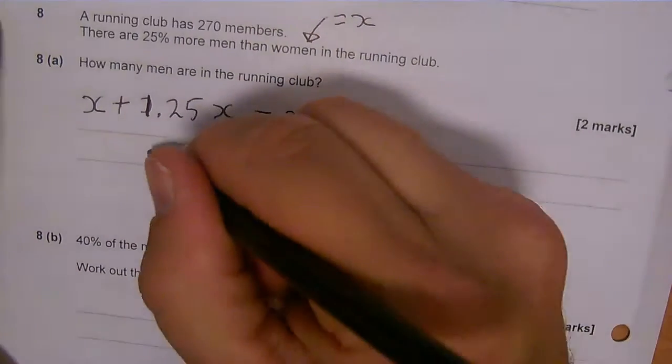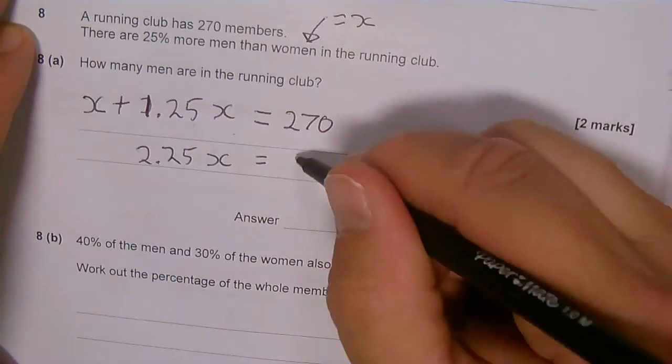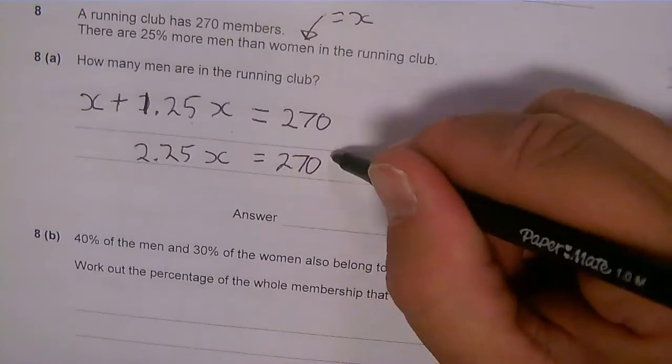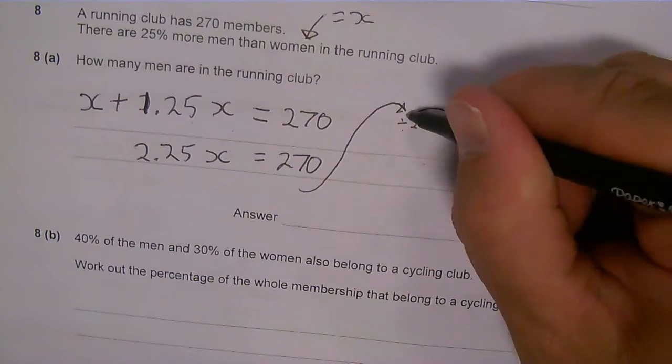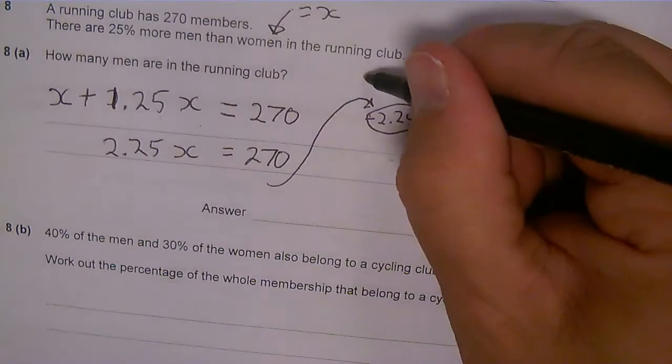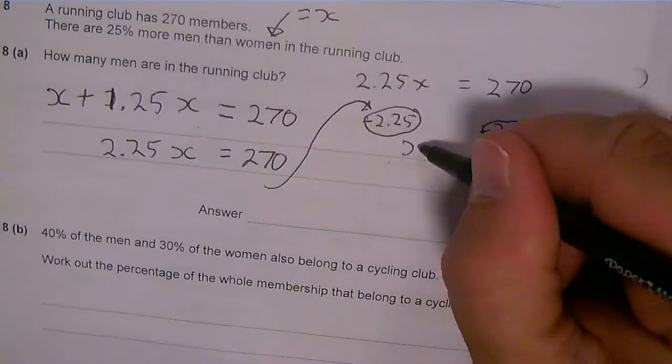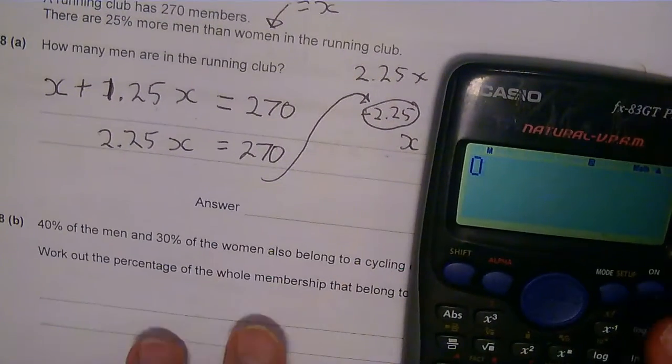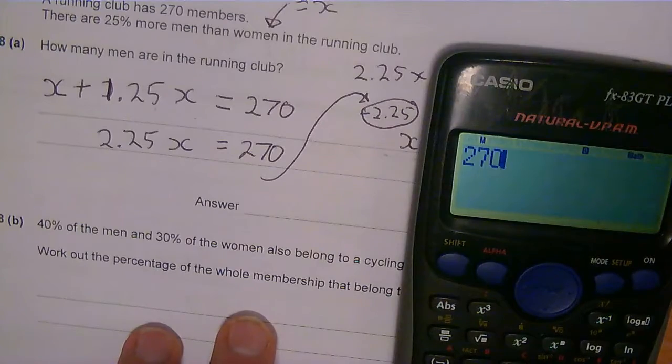So I can just simplify this to 2.25 lots of my number of women equals 270. I haven't given you that much space for this. What I would do is I'm just going to continue this working over here. If I divide both sides by 2.25, I'm going to just rewrite what was going on here: 2.25x equals 270. Now I've got x, which is my number of women. So x equals 270 divided by 2.25.